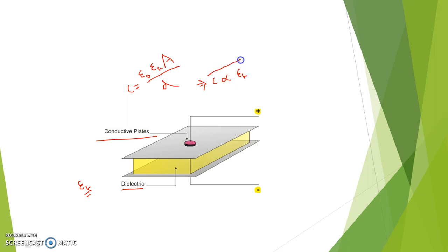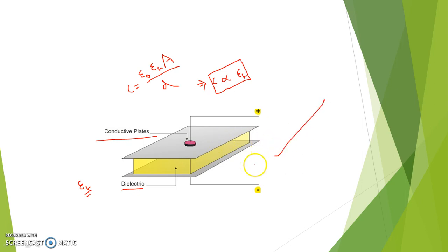So as the εᵣ of the dielectric between the two parallel conducting plates changes because of absorption of humidity, the capacitance value of the parallel plate capacitor will also change. We can easily measure the capacitance value by bridges. This is the working principle of the capacitive hygrometer.